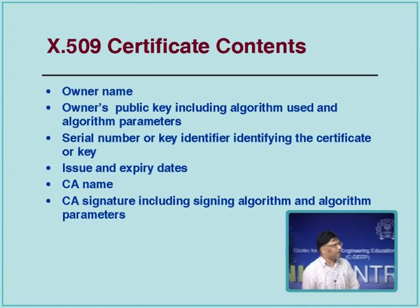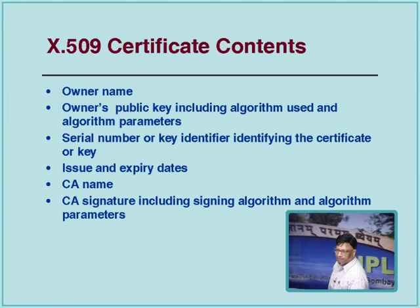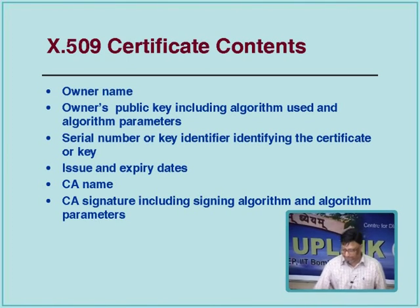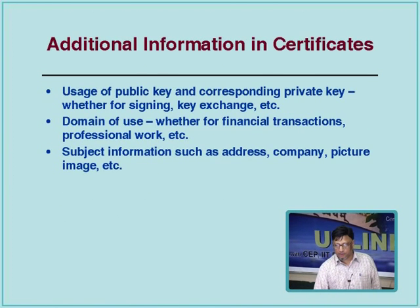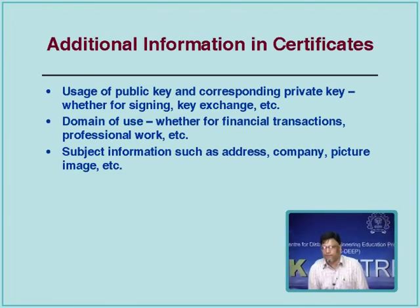An offline certificate revocation solution is necessary since going online defeats the purpose of certificates. The X.509 certificate includes the owner's name, owner's public key, validity period (issuance and expiry dates), the certification authority name, and the kind of signature used. Additional fields can include purpose (financial or professional), photograph, address, and further identity details.